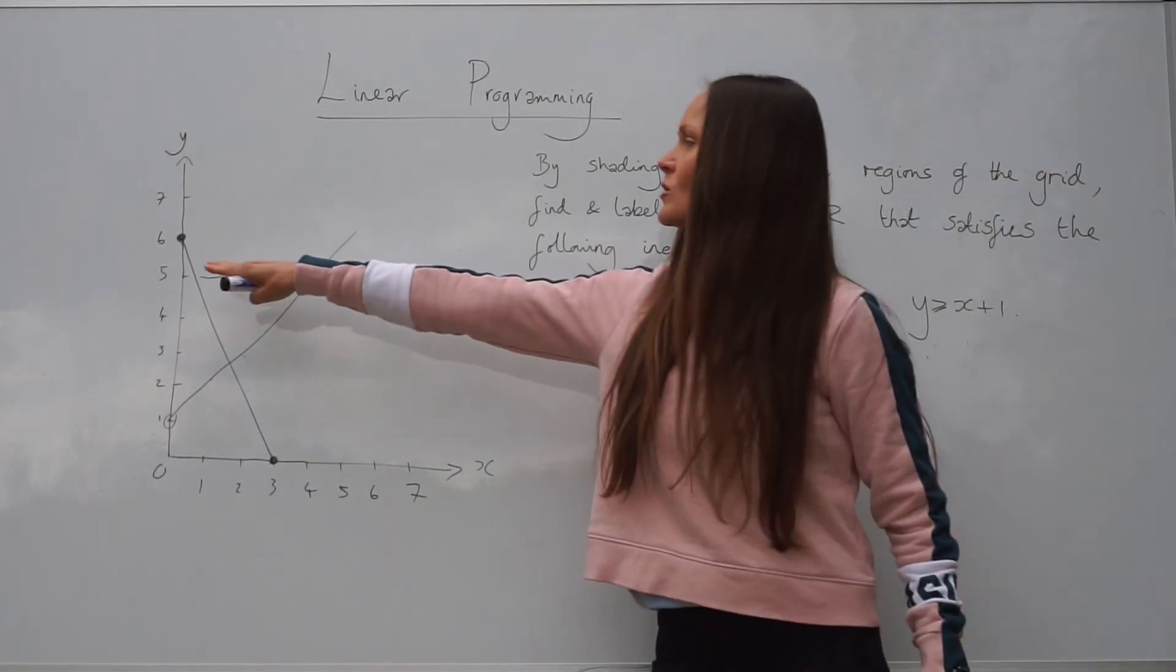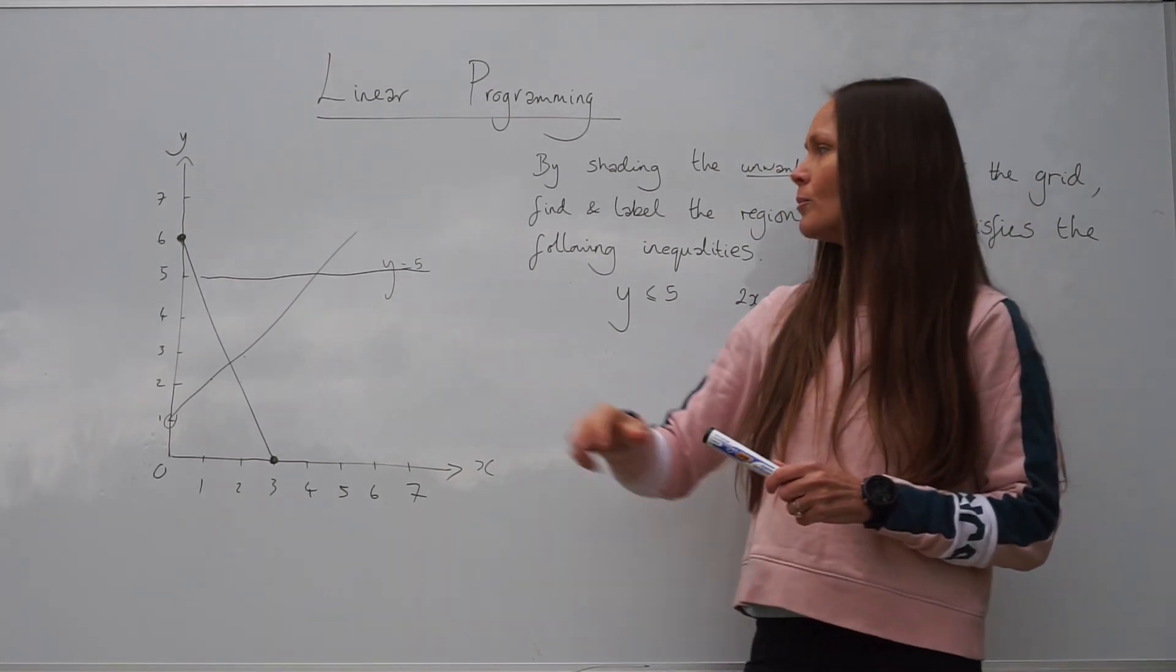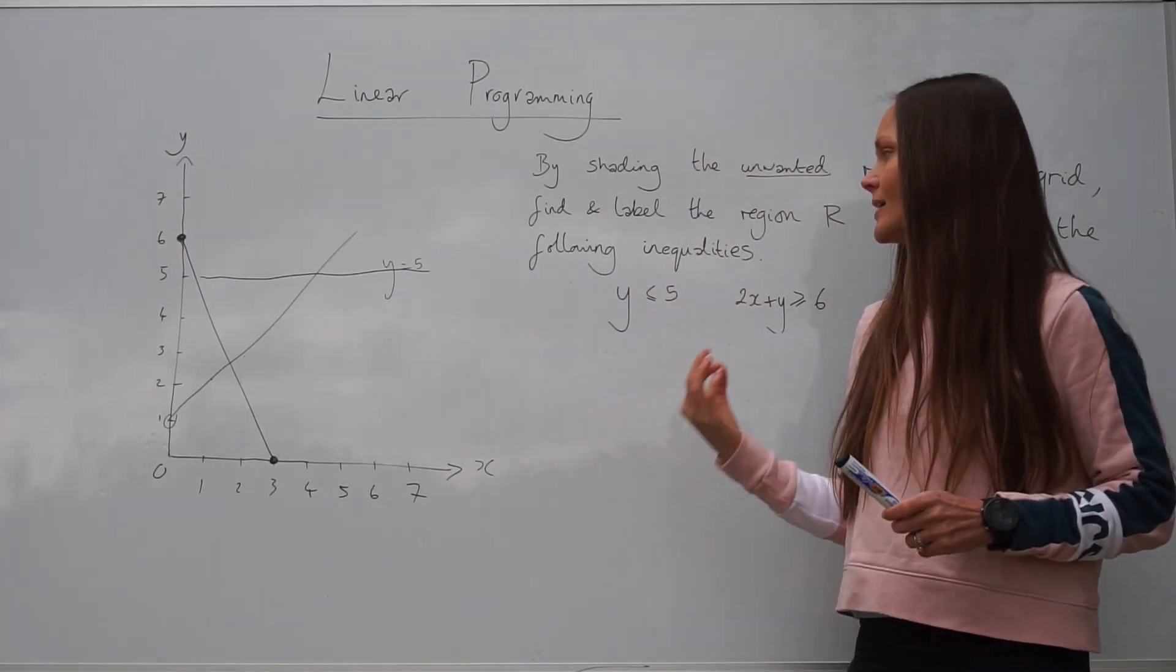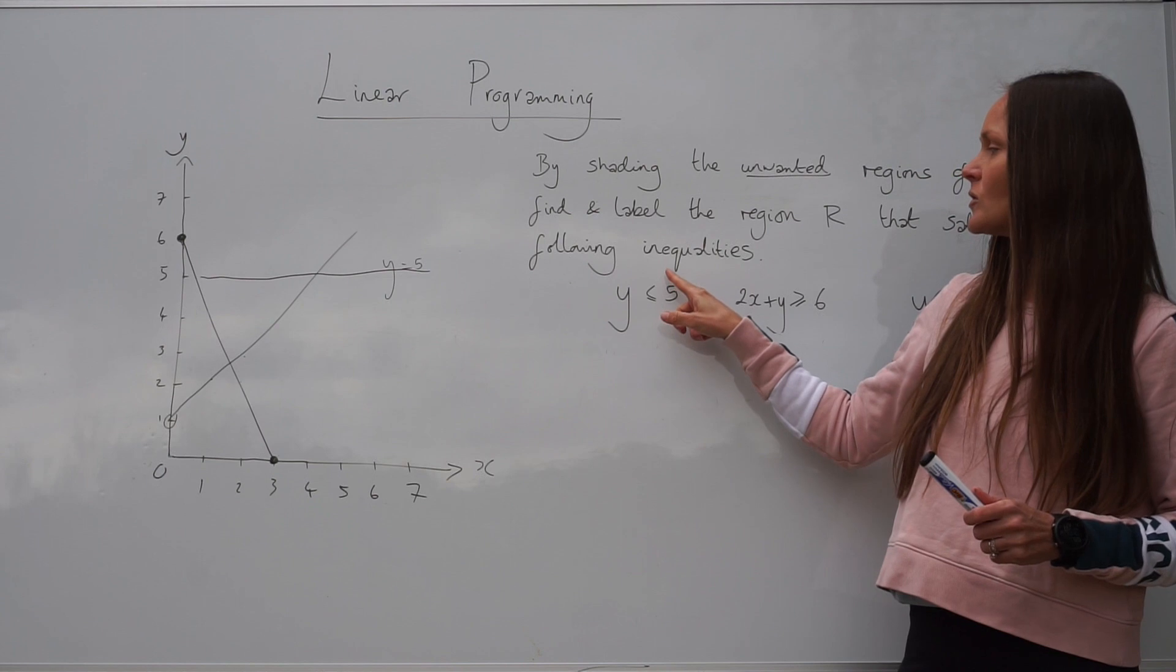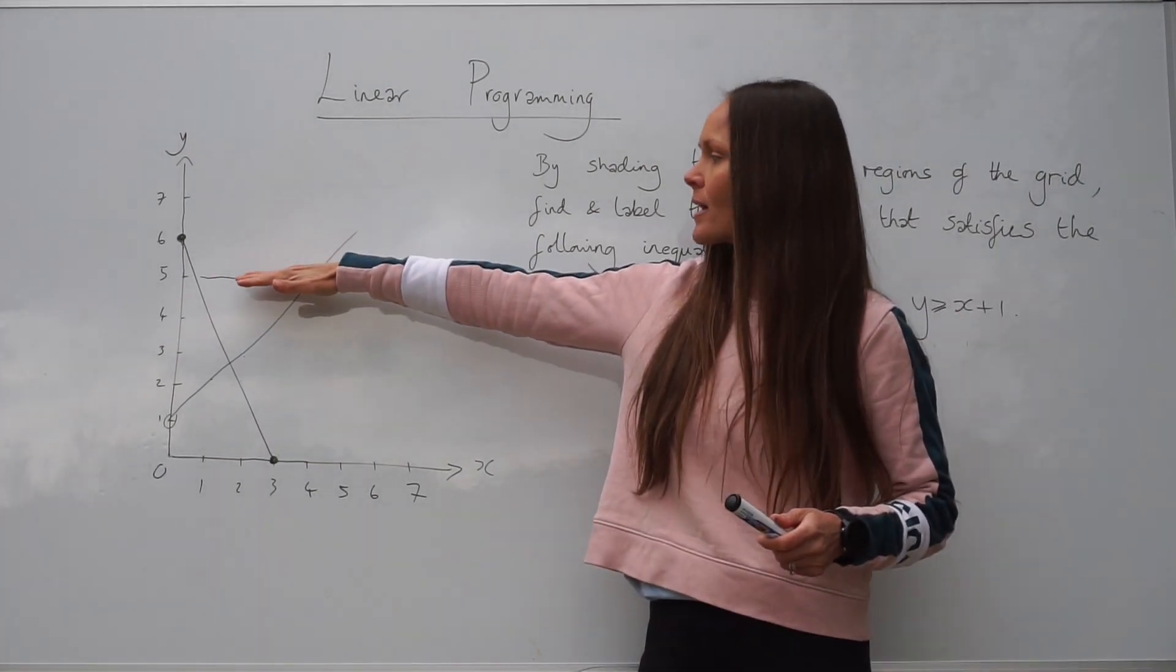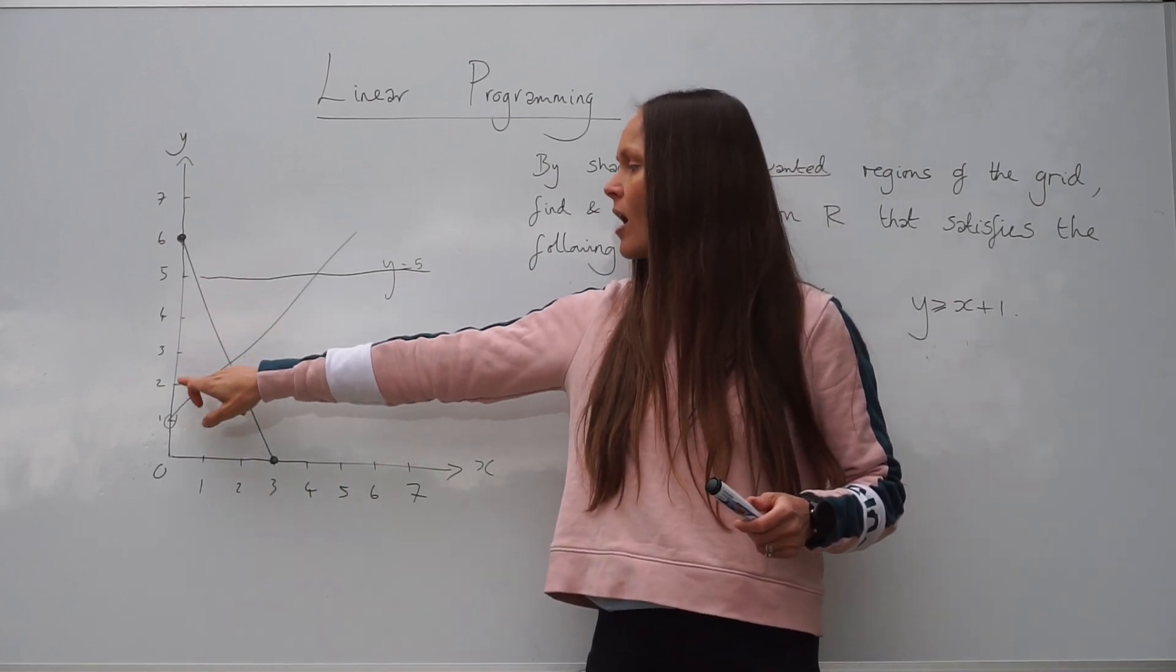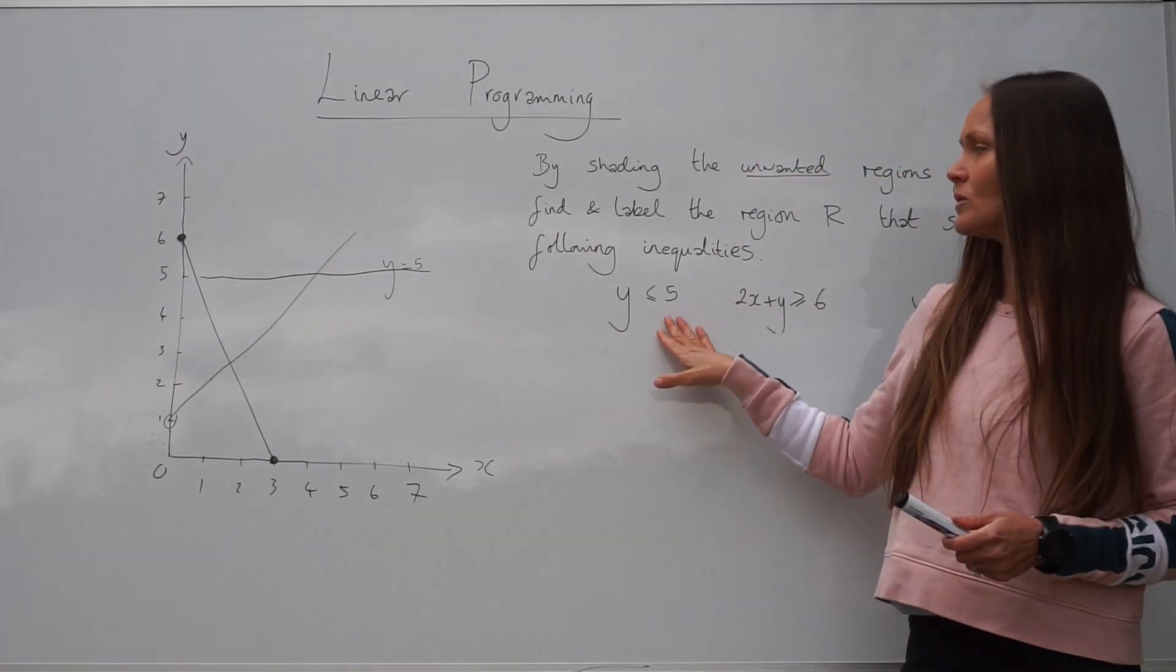This says y must be smaller than or equal to the number 5. Well, this horizontal line is y equals 5. So every point along that line, y is equal to 5. If we want smaller than or equal to 5, that would be everything below the line, because all the values of y here are smaller than 5. So that's what we want.